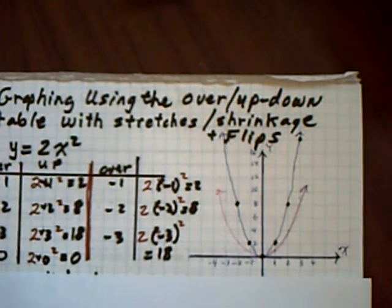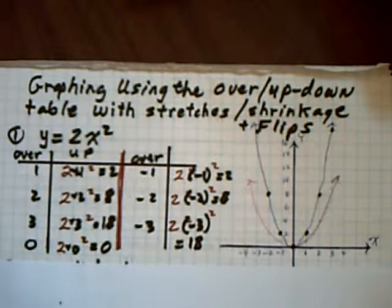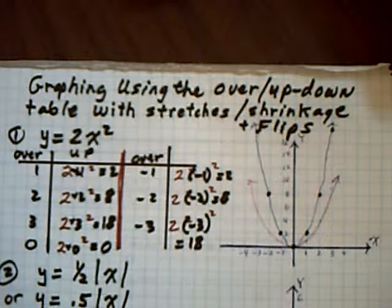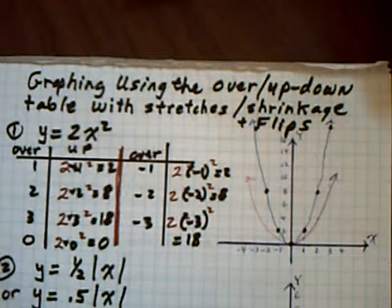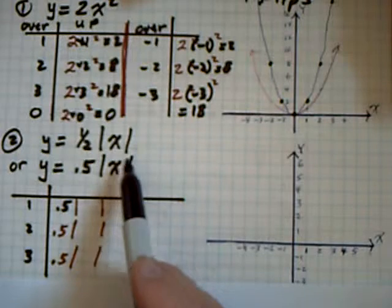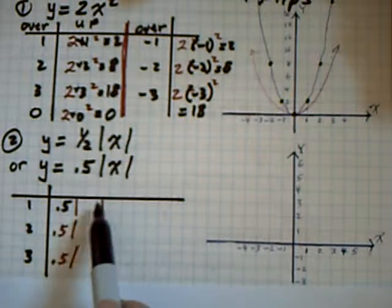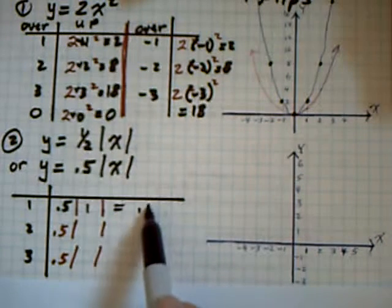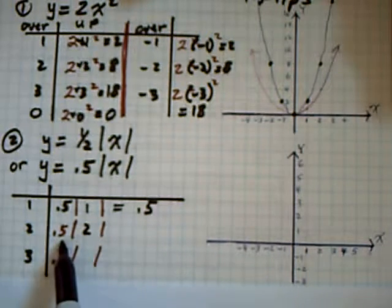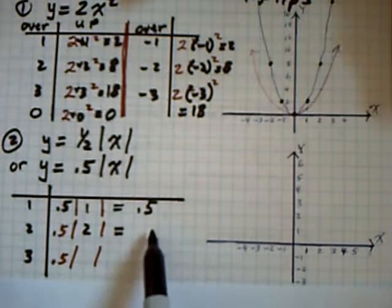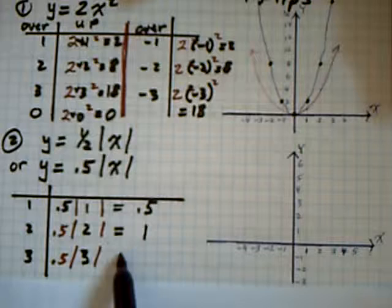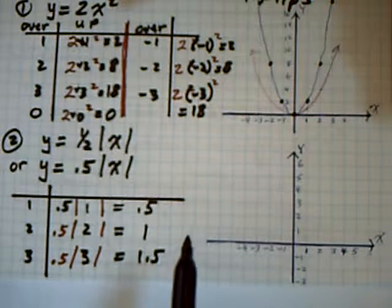So a number in front of any one of these curves is going to stretch it in the y-direction if it is a number greater than 1. Now I've taken another one of our curves, but this time with a number less than 1 — a fraction. This is our absolute value function. If I go over 1, I go up one-half times the absolute value of 1, which equals one-half. If I go over 2, I go up one-half of the absolute value of 2, which is 1. If I go over 3, I go up one-half of the absolute value of 3, which equals 1.5.